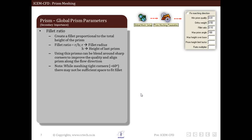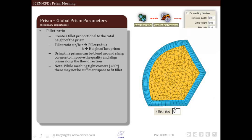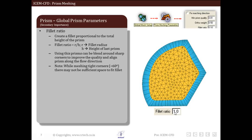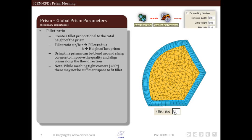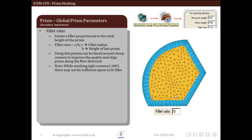This can be observed in the figure. So this is fillet ratio 0, fillet ratio 0.5, fillet ratio 1. Setting it to 0 creates sharp corners as you can see here.